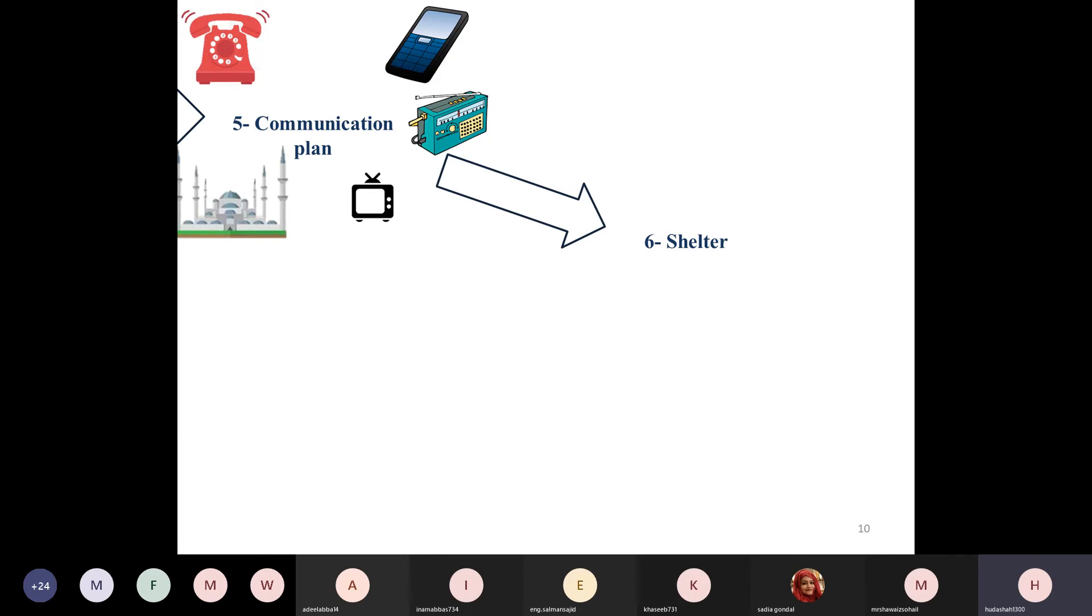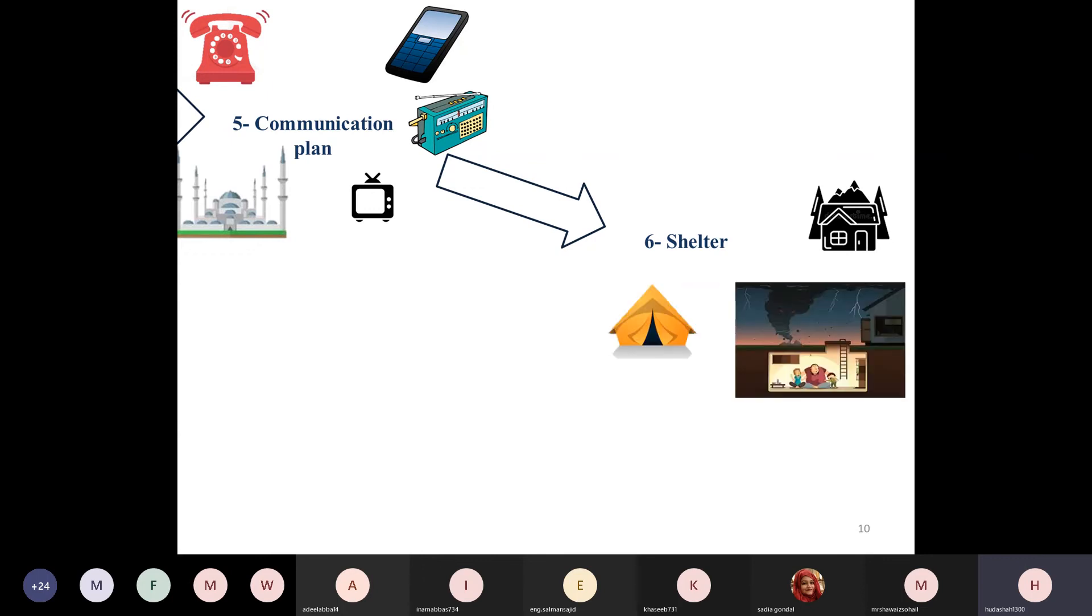Number six is shelter. The safest shelter you may have is your house. Even when you are asked to quarantine, you are asked to quarantine in your house because it's the safest place. But in case it is destroyed because of any calamity, you can take shelter in tents or in bunkers or areas located by the government or non-governmental organizations.